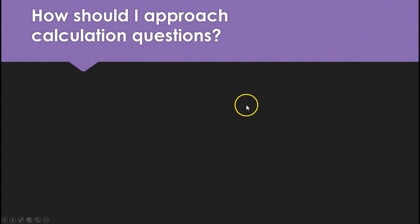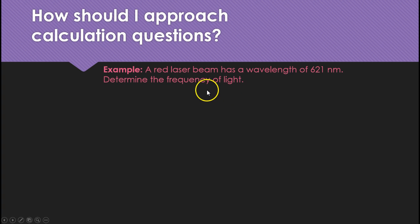So how should you approach calculation questions? Well, let's just look at one very simple example and I'll show you how I would approach it. A red laser beam has a wavelength of 621 nanometers. Determine the frequency of light. So this calculation you might see in an A level or IB or VCE paper.